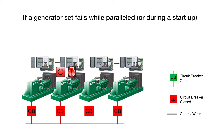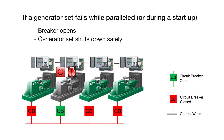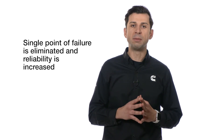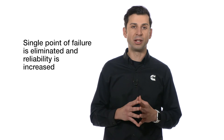If a generator set fails to start or fails while paralleled, the generator set that failed opens its circuit breaker, shuts down safely, and the paralleling operation continues seamlessly without loss of power. Also, by placing the paralleling logic on each generator set and removing it from the master control and/or switchgear, single point failure is eliminated and reliability is increased.